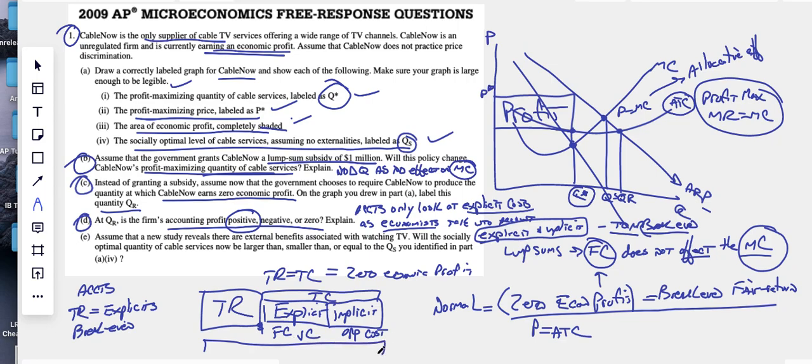The accountant, the accounting profits would have to be positive here because not only are we making enough to cover our explicit, we're also making enough to cover our implicit, which means our total revenue is greater than the explicit. Accounting profits are positive.